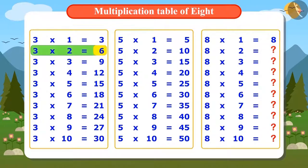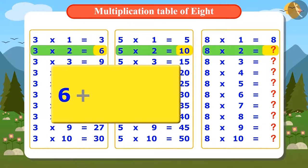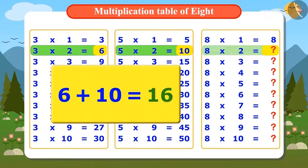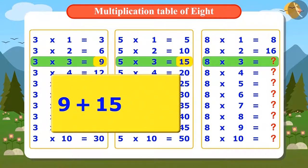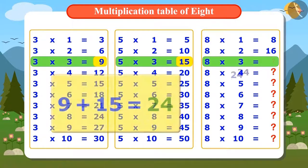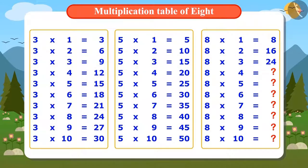we can find the second number of the multiplication table of eight by adding the second number of the table of three, which is six, and the second number of the table of five, which is ten. Six plus ten gives 16, meaning 2 times 8 is 16. To find 3 times 8, we add 9 and 15, giving 24. By adding all corresponding numbers of the 3 and 5 multiplication tables one by one, we can find the entire multiplication table of 8.